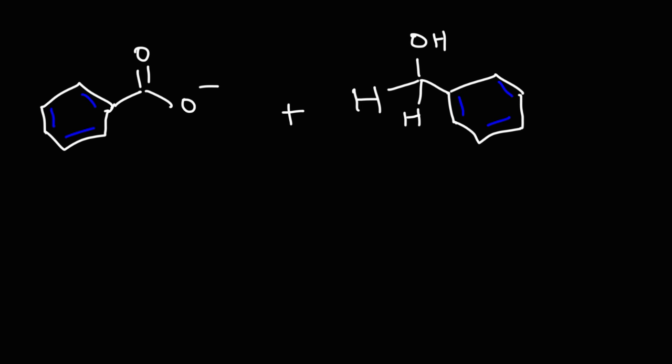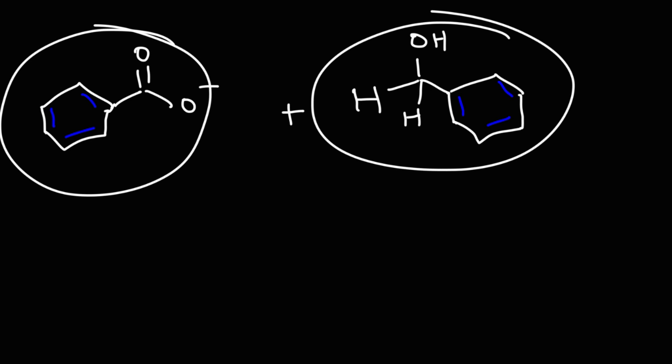So now you know the mechanism behind the Cannizzaro reaction. So the end result is if you have two aldehyde molecules that do not contain an alpha hydrogen, then they will undergo the Cannizzaro reaction. One will be oxidized to a carboxylate ion. The other one will be reduced into an alcohol.